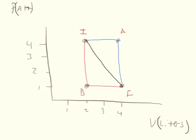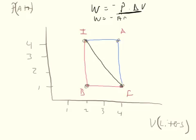The first thing we need to do is figure out the area under each of these graphs. The work done on a gas is equal to the negative pressure times the change in volume when the pressure is constant. But when the pressure is not constant, the work is equal to the negative area under the PV diagram.